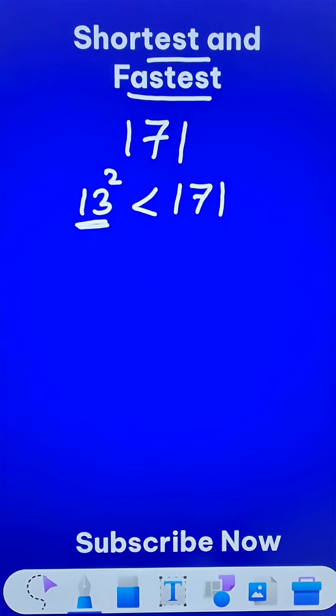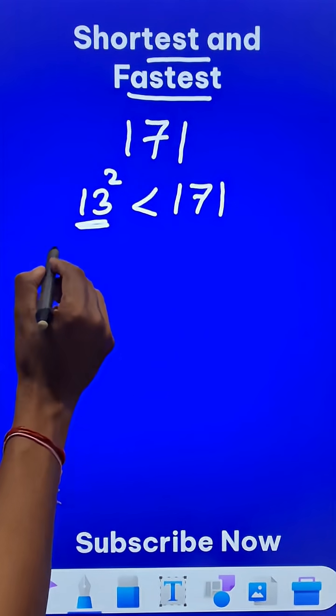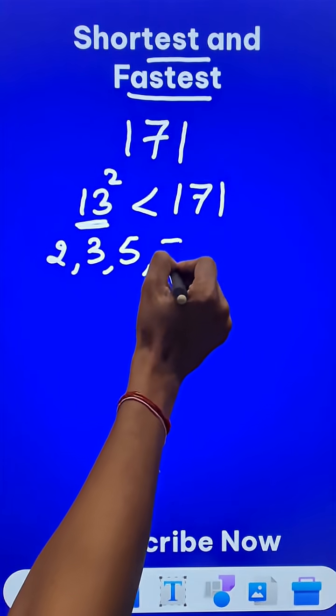So this number 13. Now I need to list down all the prime numbers below 13. What are these numbers? It starts with 2, 3, 5, 7, and 11.